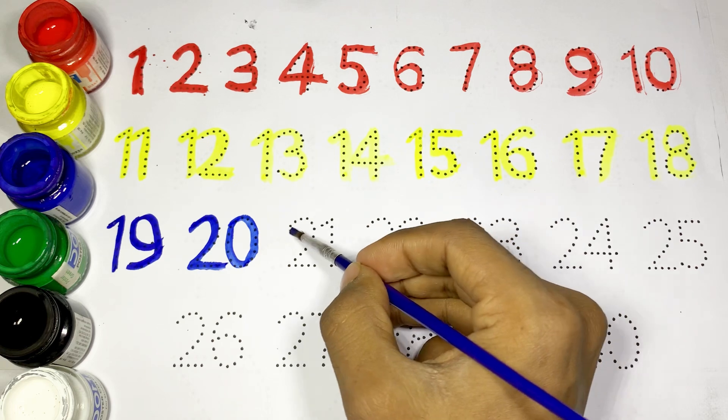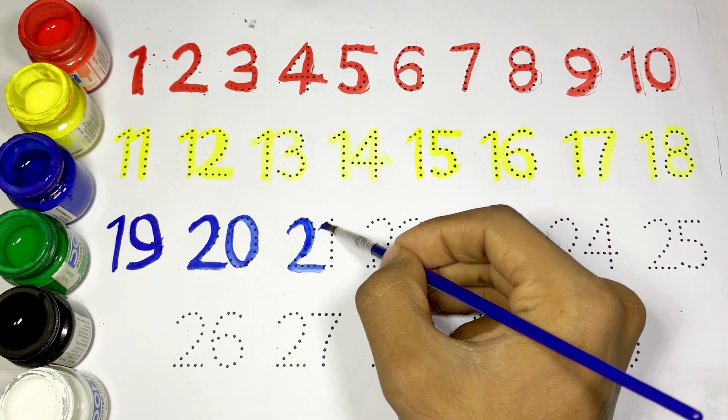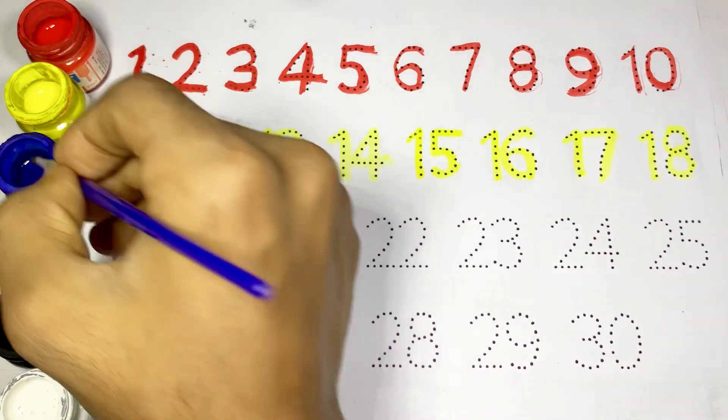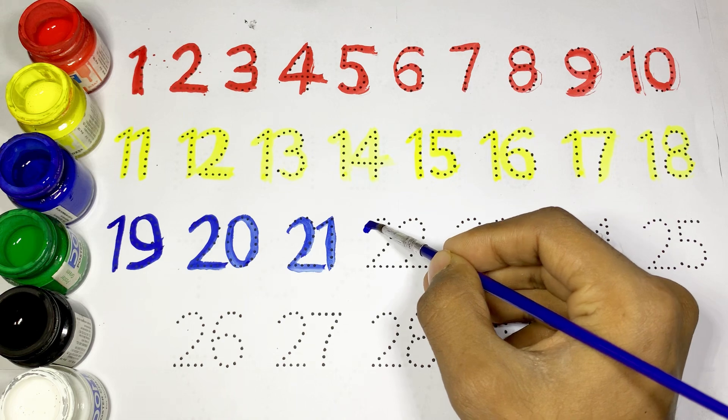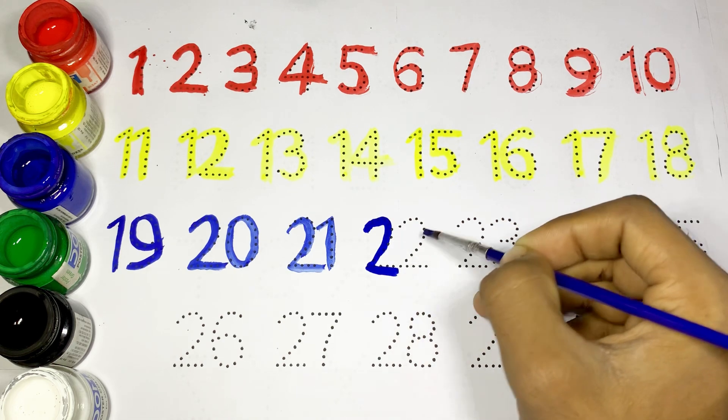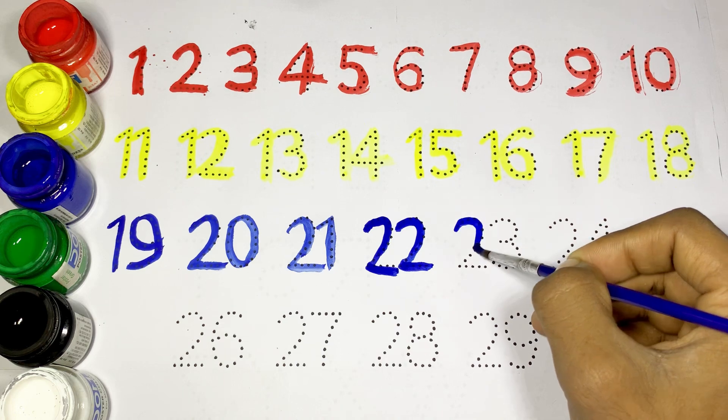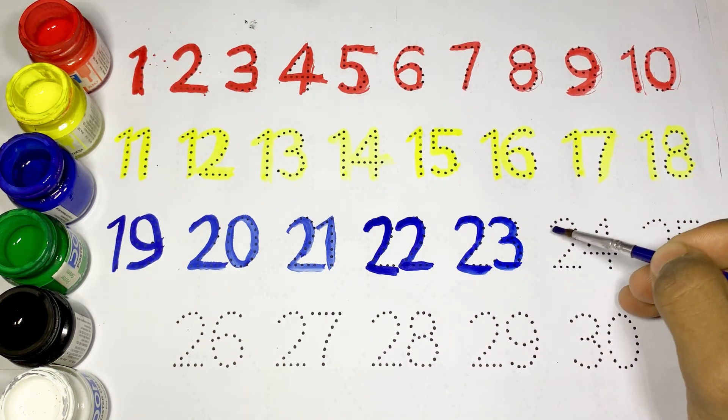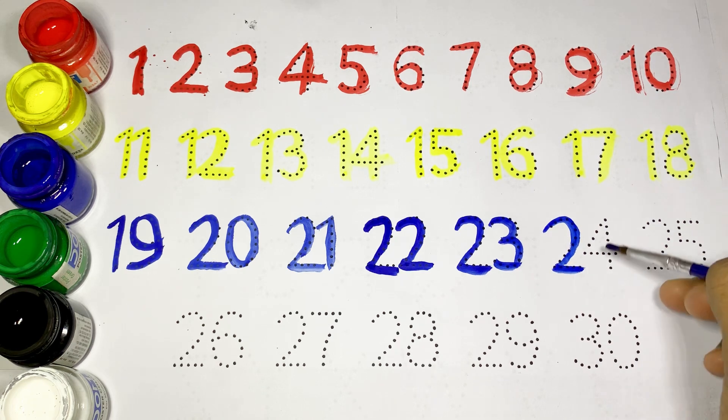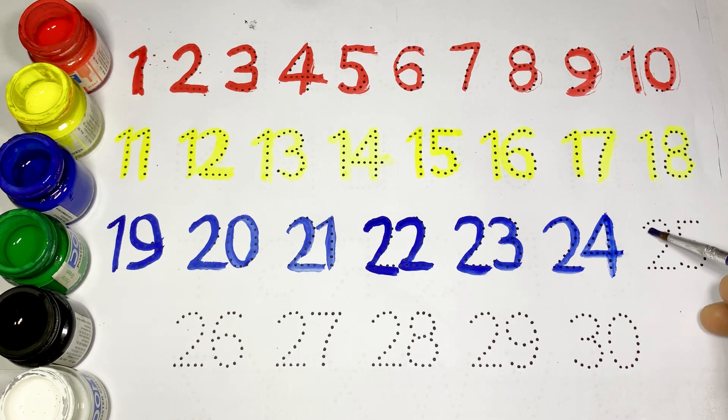21, the number is 21. 22, the number is 22. 23, the number is 23. 24, the number is 24. 25, the number is 25.